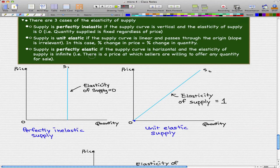One thing you need to know is, an example of this is, let's say there is a price at which sellers are willing to offer any quantity for sale. And in such a case, we will have a perfectly elastic supply.